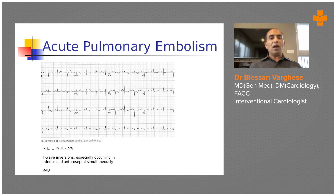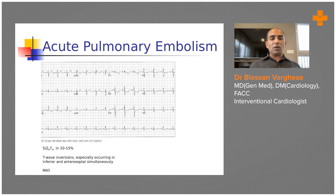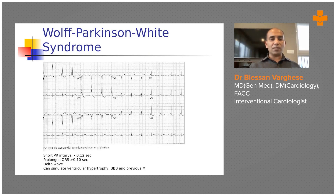This ECG represents acute pulmonary embolism. While ECG is not diagnostic of PE, classic findings include the S1Q3T3 pattern, seen in only 10 to 15 percent of patients. More important signs are incomplete right bundle branch block and RV strain — ST depression in V1, V2, V3 reflecting a strain pattern due to sudden right ventricular pressure overload causing ischemia. This RV strain pattern is suggestive of acute pulmonary embolism, though PE is not diagnosed by ECG alone.